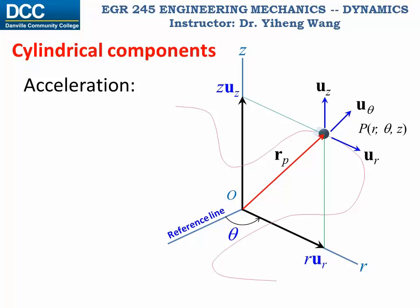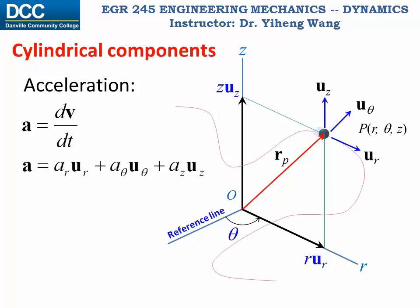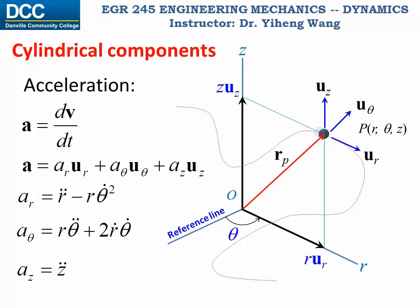For acceleration in the three-dimensional cylindrical coordinate system, it is still defined as the time derivative of the velocity vector, with three components along the r, theta, and z directions respectively. a_r equals r-double-dot minus r·theta-dot squared, where r-double-dot is the second time derivative of r. a_theta equals r·theta-double-dot plus 2·r-dot·theta-dot, where theta-double-dot is the second time derivative of theta, also known as the angular acceleration. And a_z is the same as in the rectangular coordinate system, the second time derivative of z.